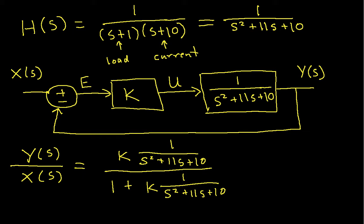And if I now multiply top and bottom by the polynomial that I have here in the denominator, this becomes K over S squared plus 11S plus 10 plus K.